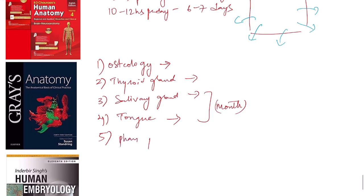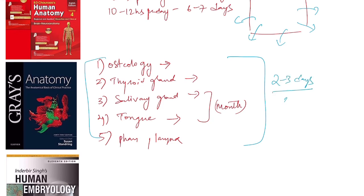The next red zone topic is pharynx and larynx, which has to be done top to bottom. This is one combination where you need to spend quality time — at least 15% of your time, meaning a minimum of two to three days each of eight to ten hours, to finish this content properly.